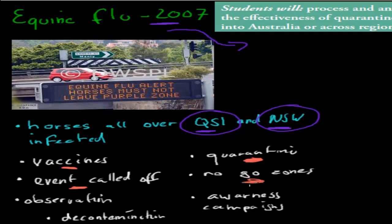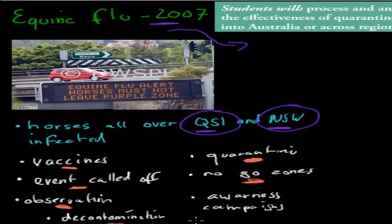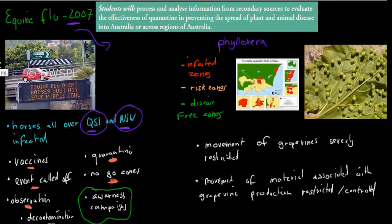We had no-go zones established - as you can see here, it says 'Equine Flu Alert: horses must not leave purple zone' - so horses in infected areas couldn't pass these zone boundaries. We had lots of observation happening, so all horses were observed for symptoms. We had decontamination of any area found to have lots of infected horses, by burning things which might be infected and using pesticides. We also had awareness campaigns to tell people about the flu and that we didn't want it to spread. Whilst the flu did come to Australia, by 2008 - one year later - there were no more signs of it. It was completely gone.